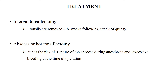Other options include abscess or hot tonsillectomy, which can be done in the active case of peritonsillar abscess, though there is a high risk of abscess rupture during anesthesia with excessive bleeding due to acute infection. The other option is interval tonsillectomy — after the current attack subsides or heals, tonsillectomy is performed four to six weeks later.